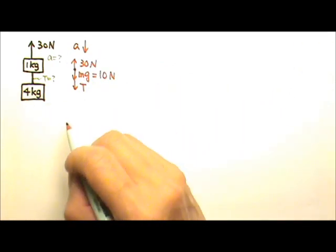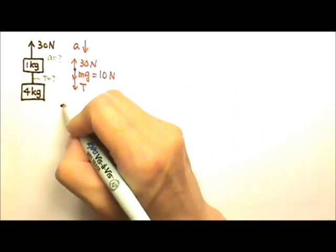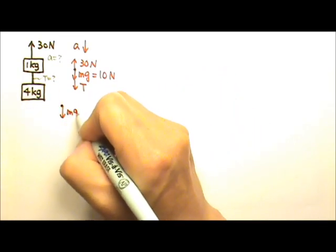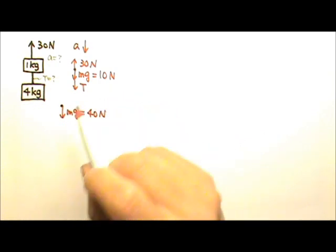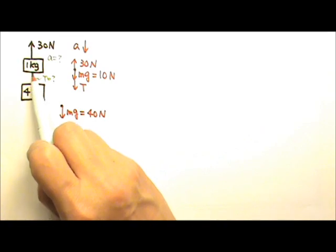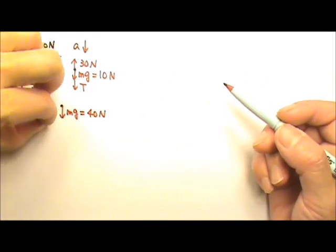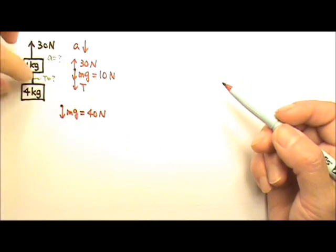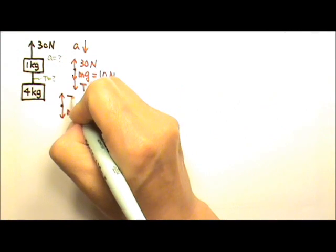For the 4 kilogram box, you also have mg — the non-contact force — which is 4 times 10, or 40 newtons. The 4 kilogram box is only touching one string. A string can only pull, so the tension is a pulling force upward on the 4 kilogram. So there's an upward tension.